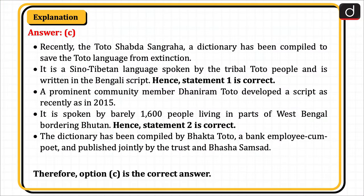Recently, the Toto Shabda Sangr Hai, a dictionary, has been compiled to save the Toto language from extinction. It is a Sino-Tibetan language spoken by the tribal Toto people and is written in the Bengali script. Hence, statement 1 is correct. A prominent community member, Dhaniram Toto, developed a script as recently as 2015. It is spoken by barely 1,600 people living in parts of West Bengal bordering Bhutan. Hence, statement 2 is correct. The dictionary has been compiled by Bhakta Toto, a bank employee and poet, published jointly by the trust and Bhasha Samsad. Therefore, option C is the correct answer.